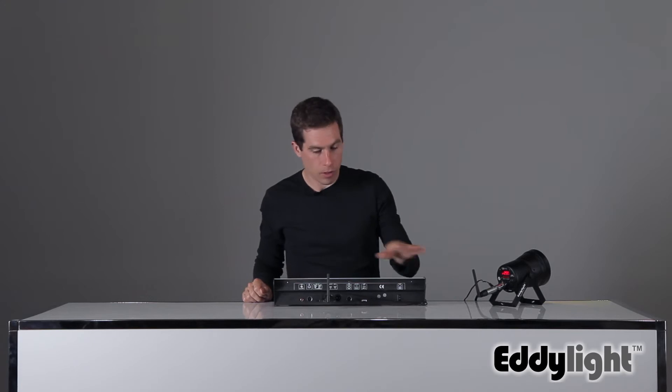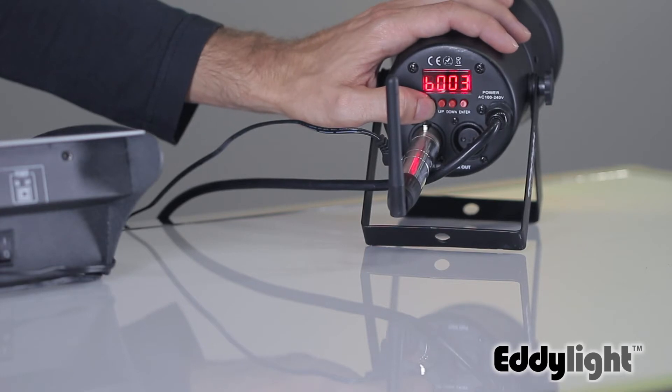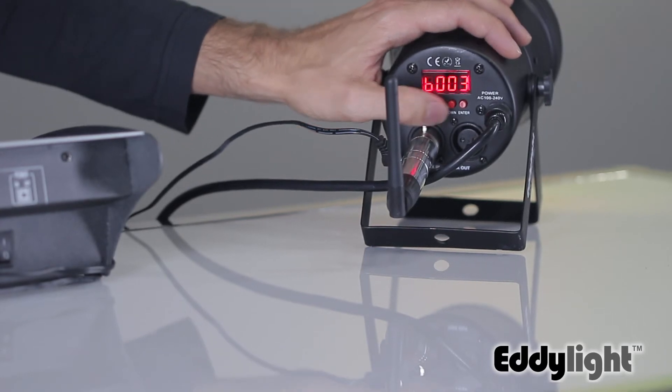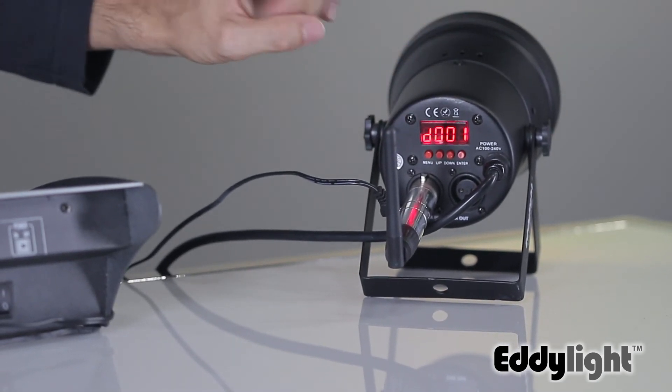Once you're plugged in, they're connecting, but you still have to set the light to DMX mode, which you can do so by cycling through until you get to your address, which on this light is indicated by a D.